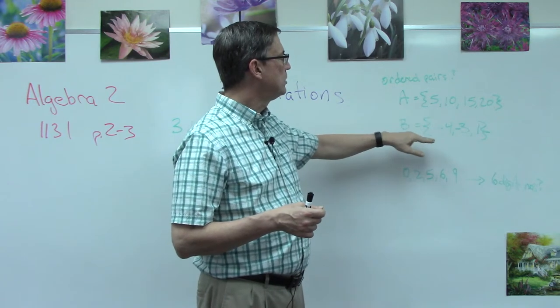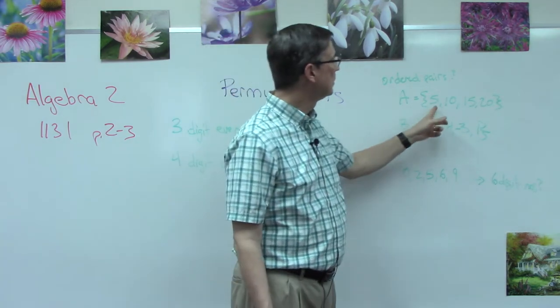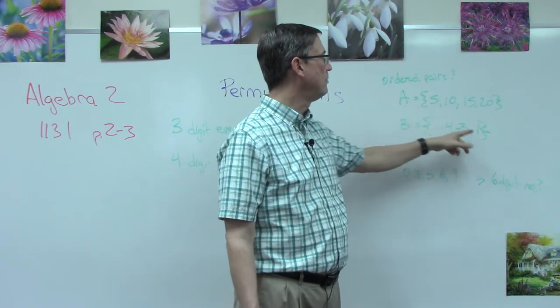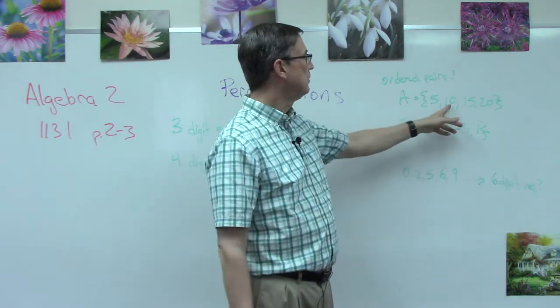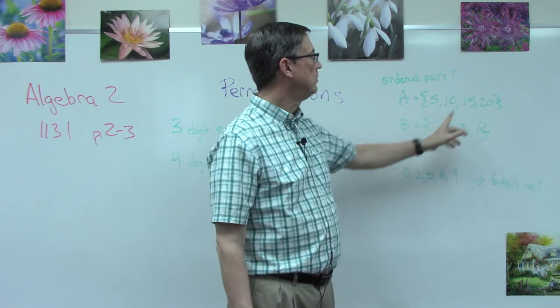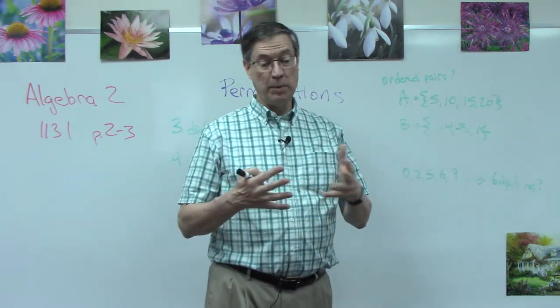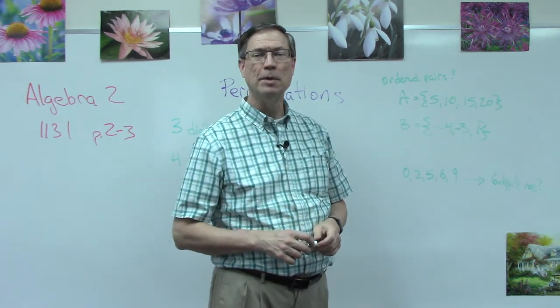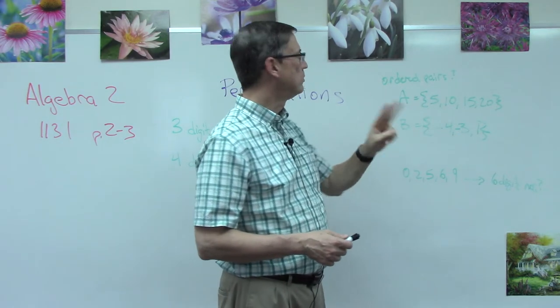So we could list them out and say, well, I could match 5 with negative 4, I could have 5 negative 3, I could have 5 and 1. So right away you've got three of them. Now you can do the same thing with 10, you can do the same thing with 15, you can do the same thing with 20. The long way would be to write them all out and count them up, but thankfully there is a much easier method.